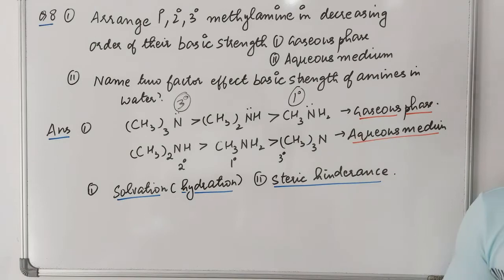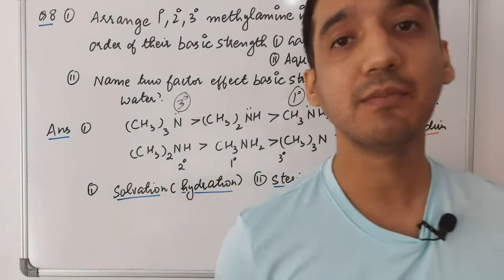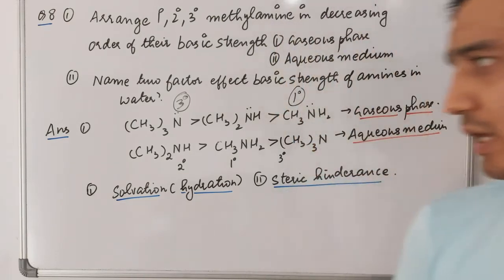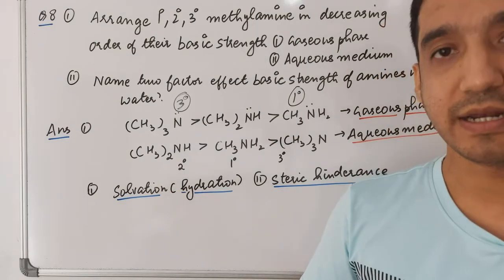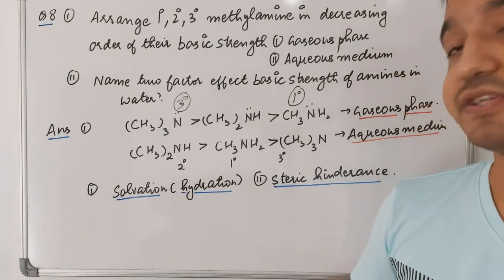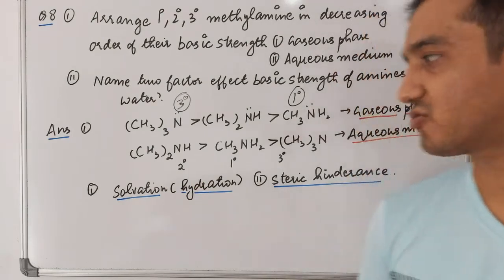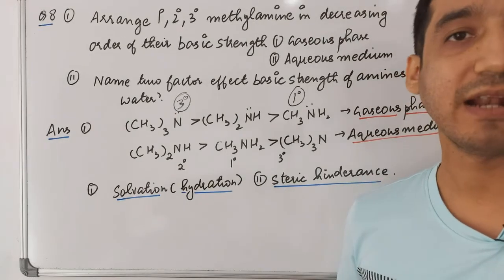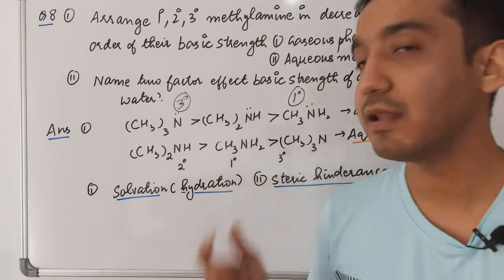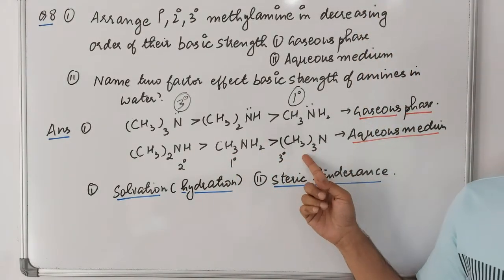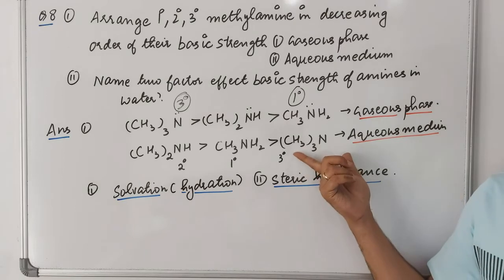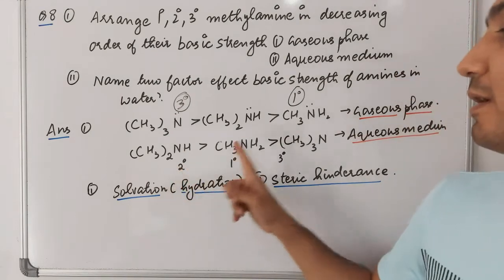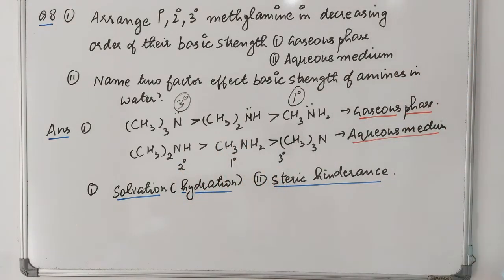In aqueous medium, two effects operate: inductive effect and hydrogen bonding. Secondary amine shows both inductive effect and hydrogen bonding efficiently, so it has the highest basic strength. Primary amine has stronger hydrogen bonding than inductive effect, placing it second. Tertiary amine has only the inductive effect and cannot form hydrogen bonds, so it has the lowest basic strength. The order in aqueous phase is: secondary > primary > tertiary.